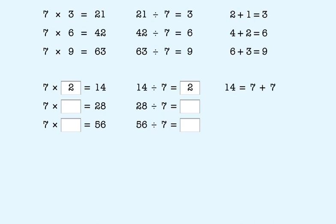28 is double 14, and each 14 is double 7. We have 4 sevens, so the missing factor is 4. That means 28 divided by 7 is 4.